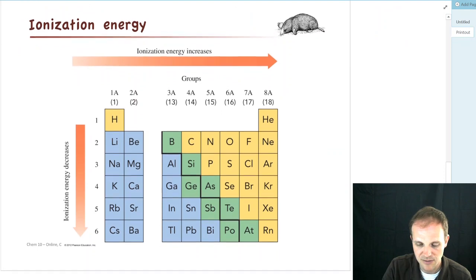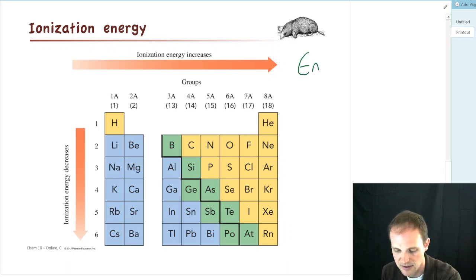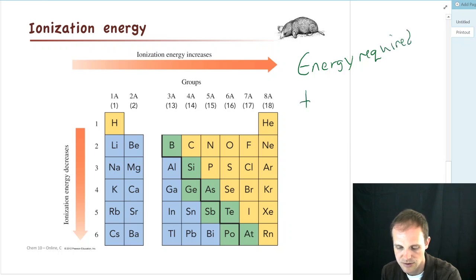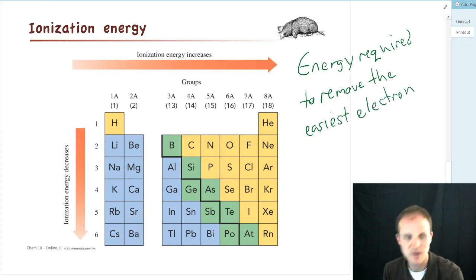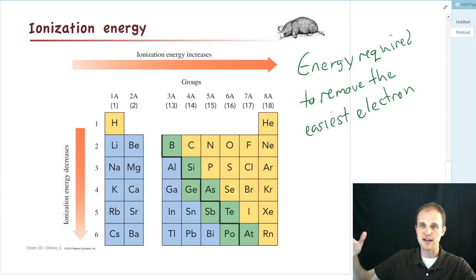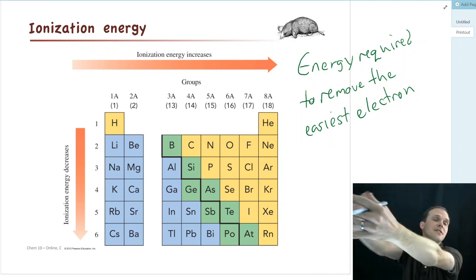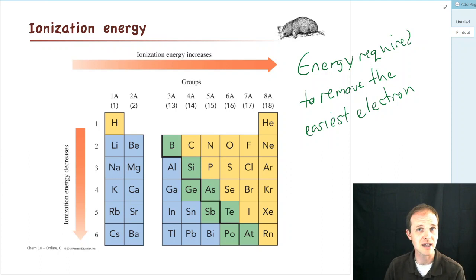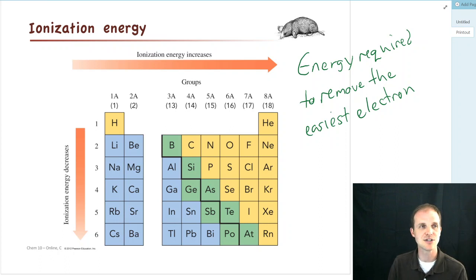The other trend we're going to look at is called ionization energy — the energy required to remove the easiest electron. What do we mean by the easiest electron? Remember, electrons are in different levels. The easiest ones to remove are the furthest out electrons — like the outermost shell.